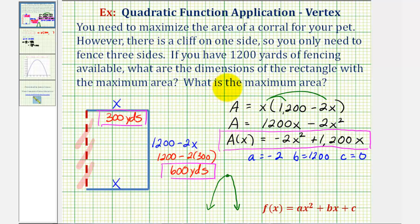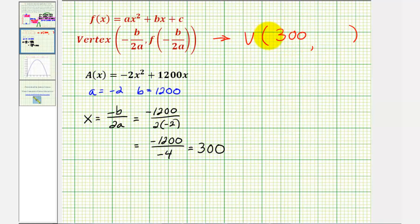But we're also asked to find the maximum area, which would just be the product of 300 and 600. But if we go back to our work just for a moment, now that we have x equals 300, we could also find the area by finding the y-coordinate or the function value of our function A(x).